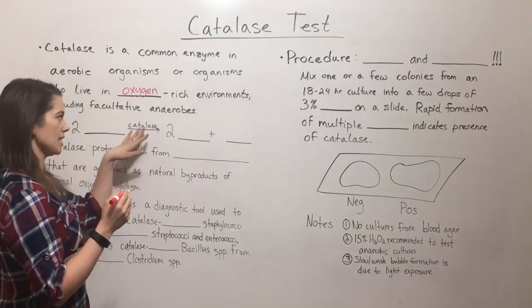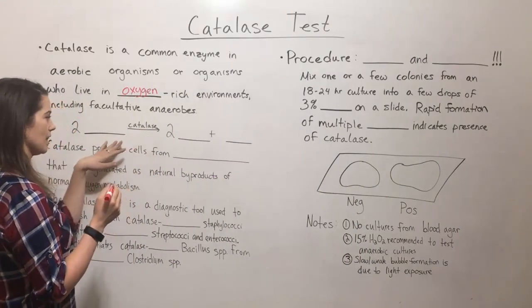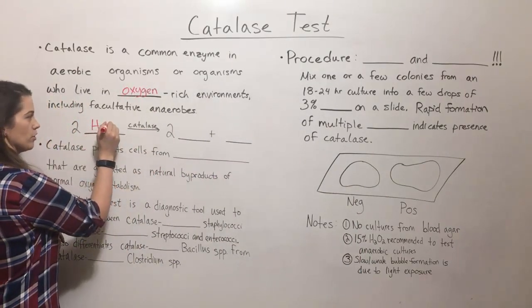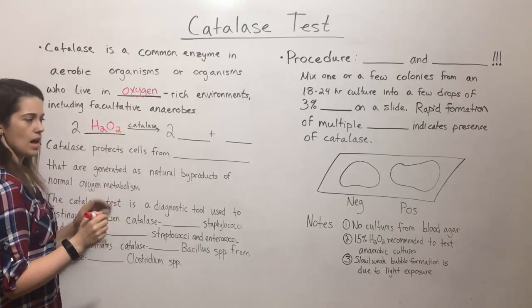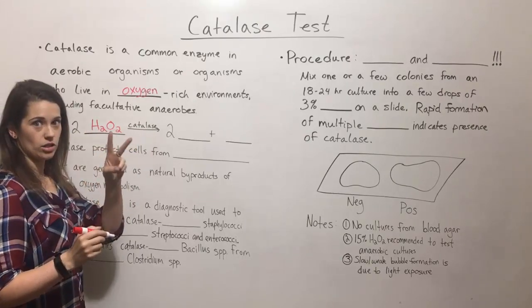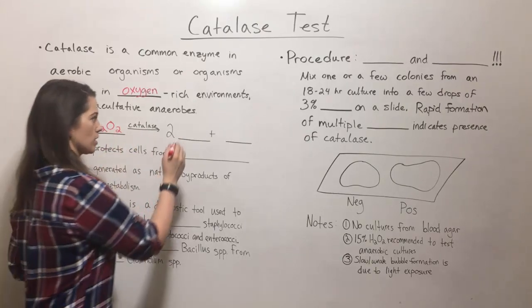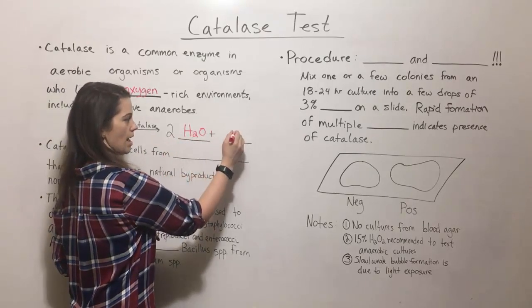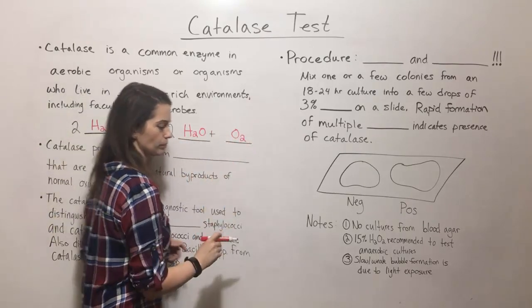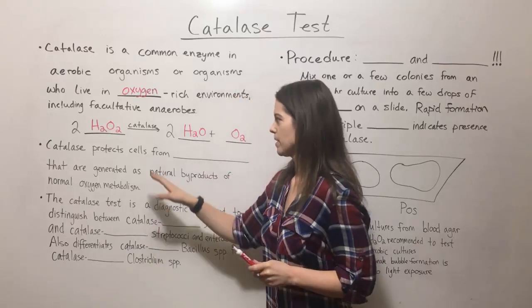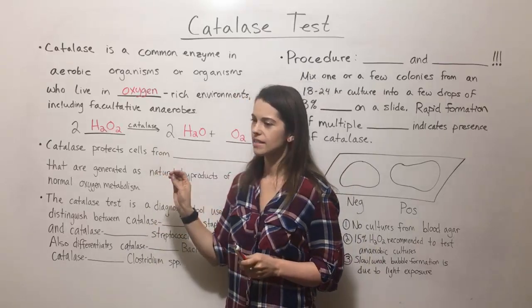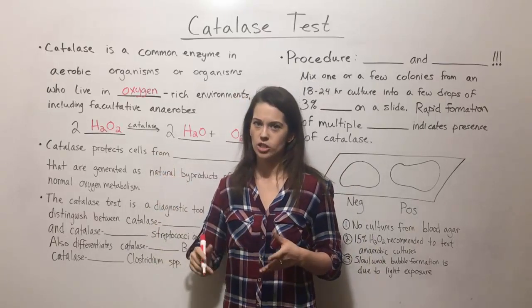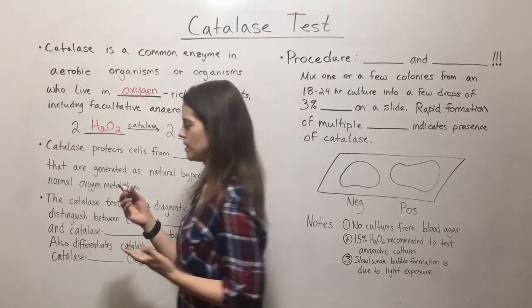What catalase does is it catalyzes a reaction where it breaks down hydrogen peroxide into two products: water and oxygen gas. And this is important because it protects cells from oxidative damage that comes from reactive oxygen species.